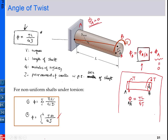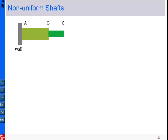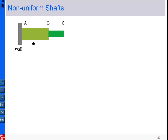Now, looking at a two-segment shaft model: segment AB has length L_AB, rigidity modulus G_AB, and polar moment of inertia J_AB. Similarly, segment BC has length L_BC, rigidity modulus G_BC, and polar moment of inertia J_BC. A torsion T is applied, and we take the free body diagrams of each portion separately.